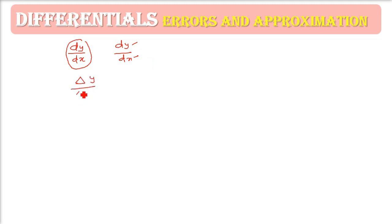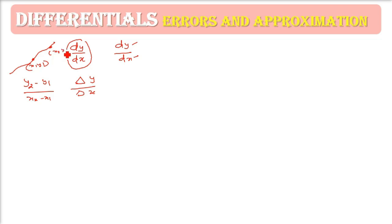How did we get this? When we said delta y by delta x — that is, change in y (y2 minus y1) and change in x (x2 minus x1) — if you make a graph with one point (x1, y1) and the other (x2, y2), the slope is (y2 minus y1) divided by (x2 minus x1). The change is called delta. So when delta x tends to zero, delta y by delta x becomes dy/dx.